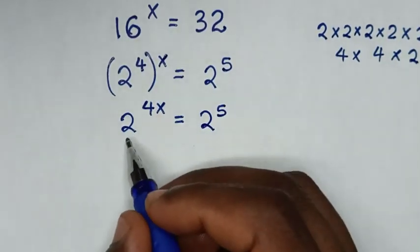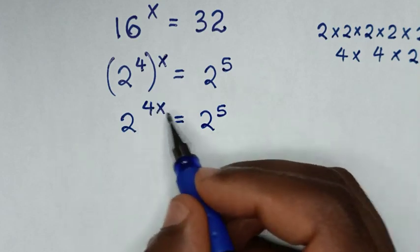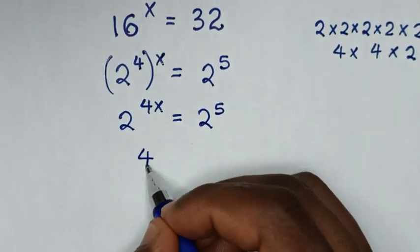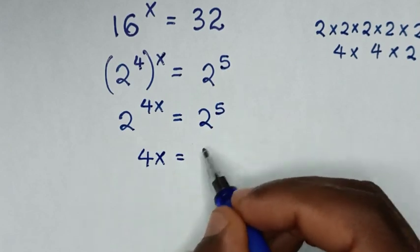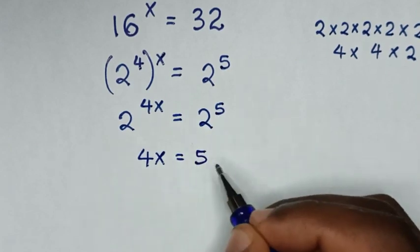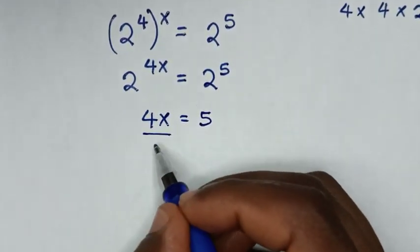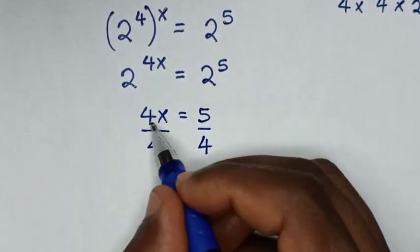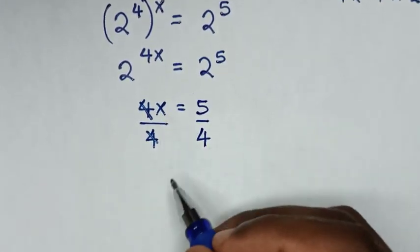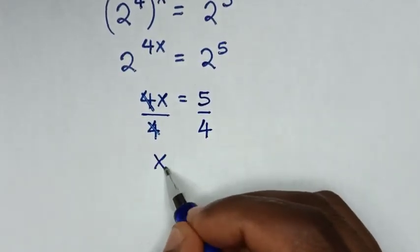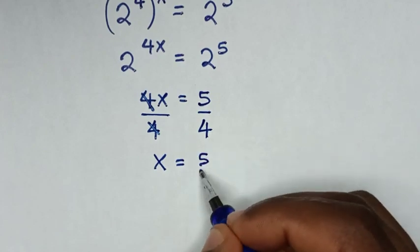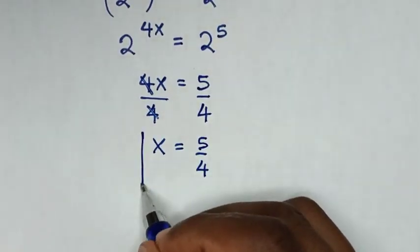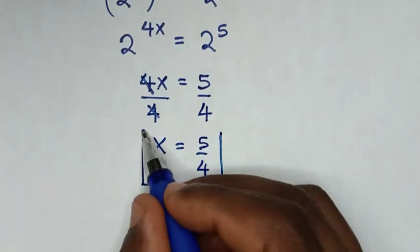Now, in here we have the same base of 2, so we'll compare these powers. So it will be 4x is equal to 5. Then in the next step, we divide by 4 on both sides. This and this will cancel, then it will be x is equal to 5 over 4. Therefore, this is our final answer.